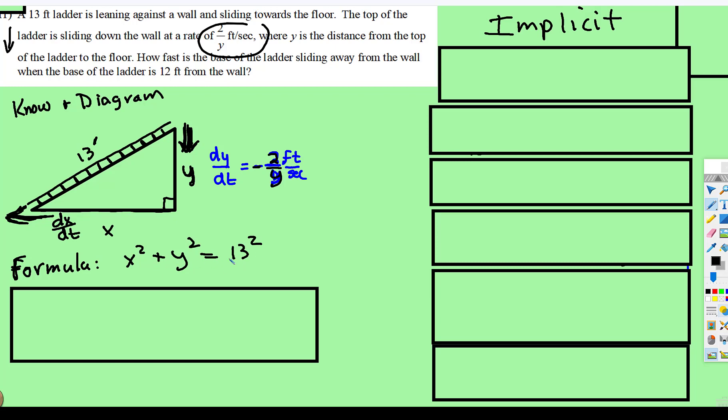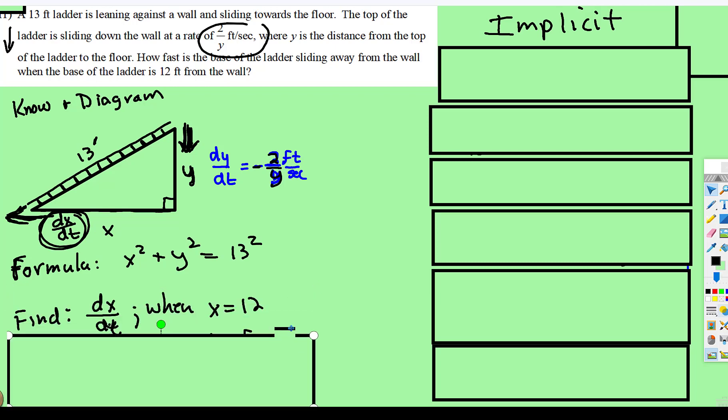So this is implicit differentiation, and what we're trying to find is this dx/dt. So we're going to try to find dx/dt at the exact moment when you're 12 feet away from the wall and at a height of 5 feet.